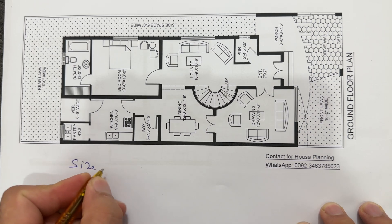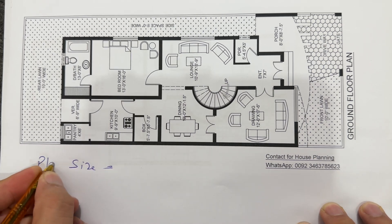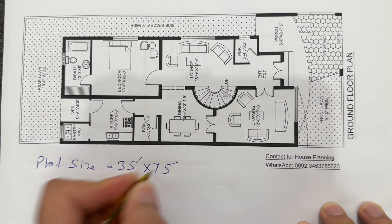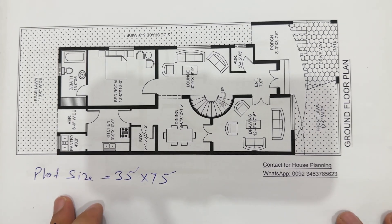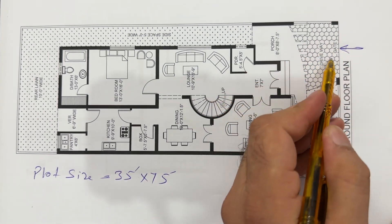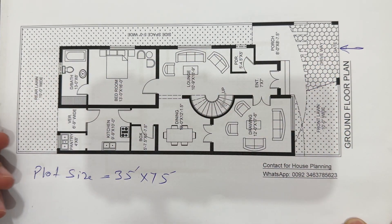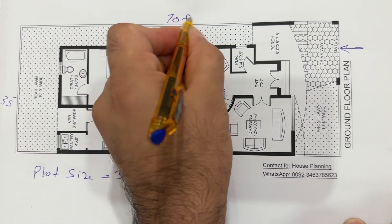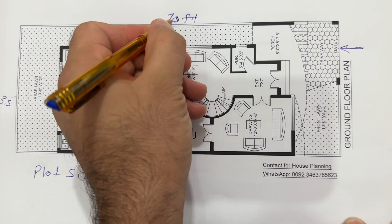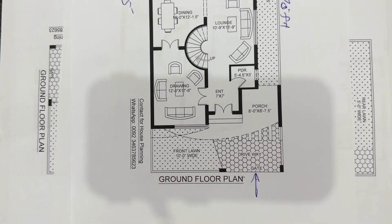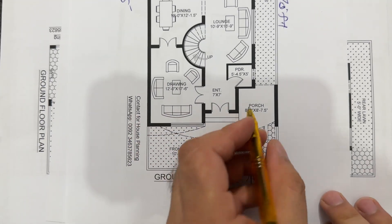Plot size is 35 by 75 feet. As you can see clearly here, this is the main entrance and main gate. The width is 35 feet as discussed, and the length is 75 feet. When you enter by this main gate, you will directly see the porch.